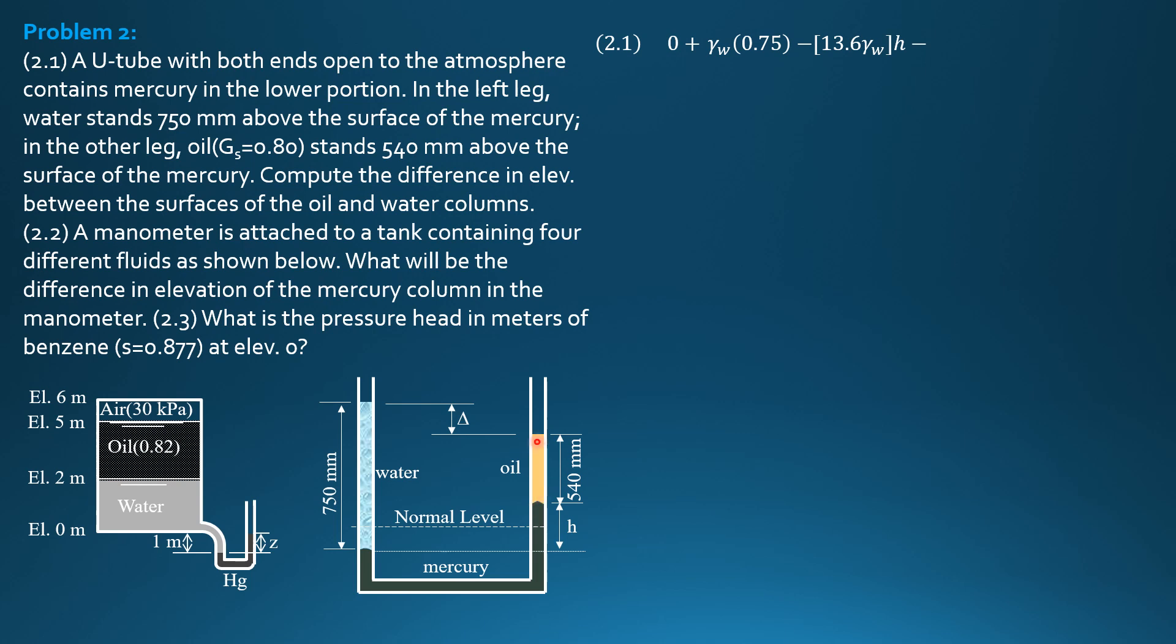Then rise again, minus gamma of oil times 8, so specific gravity of oil, 0.8 times gamma of water, times 0.54. Then we now reach this point where the pressure is zero, so that's why we equate to zero.